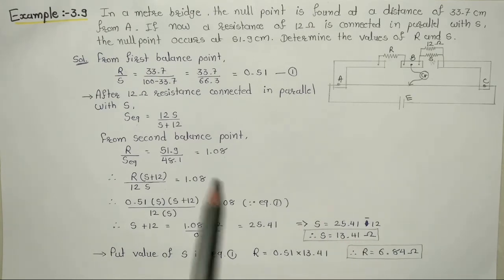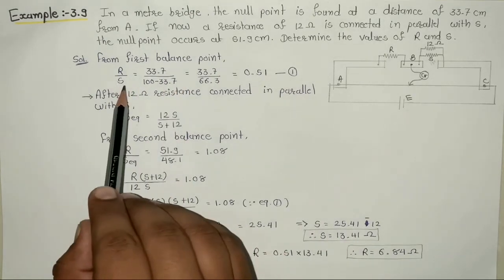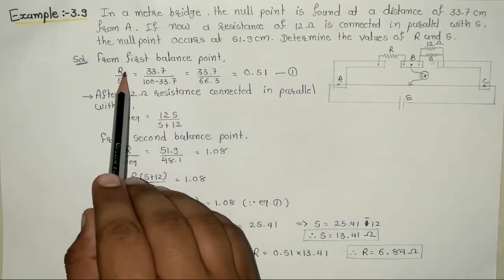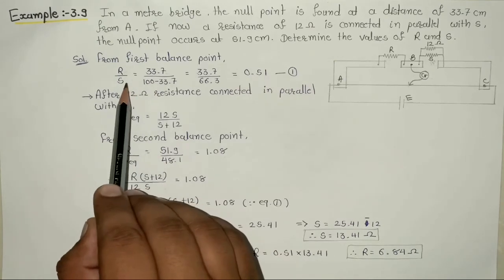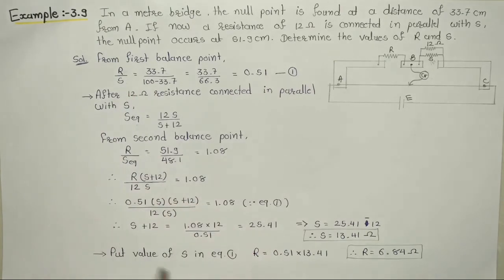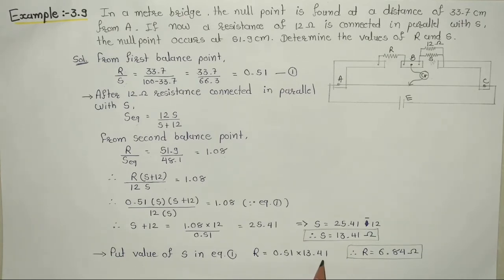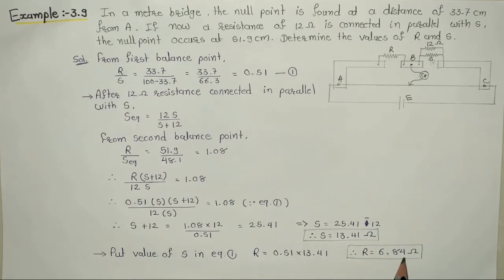S की value equation number 1 में रखेंगे तो R equal to 0.51 into S, that means R equal to 0.51 into 13.41. इस तरह से R की value मिलेगी: R equal to 6.84 ohm.